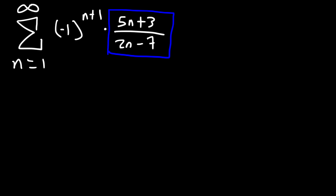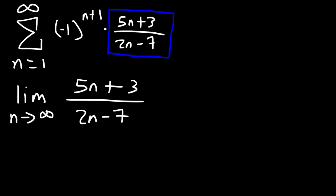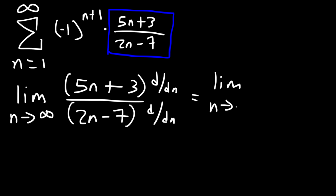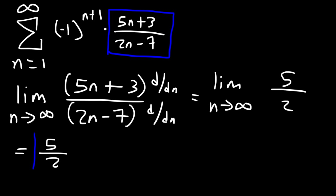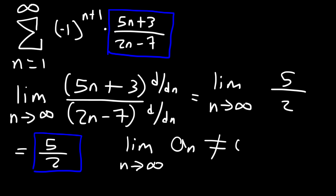Starting with the divergence test: take the limit as n goes to infinity of 5n plus 3 over 2n minus 7. Using L'Hôpital's rule, the derivative of 5n plus 3 is 5 and the derivative of 2n minus 7 is 2, giving a limit of 5 over 2. Because the limit does not equal 0, the series fails the divergence test and also fails the alternating series test. The conclusion is that this series diverges.